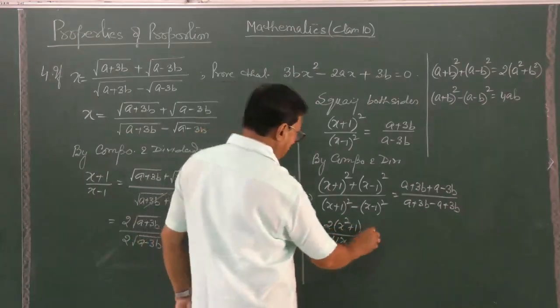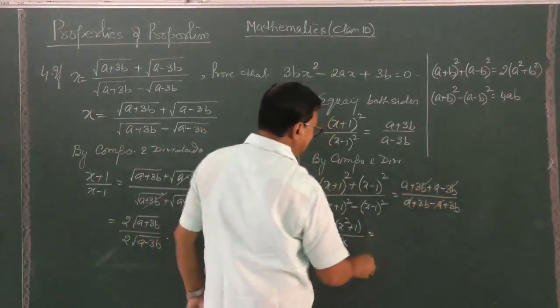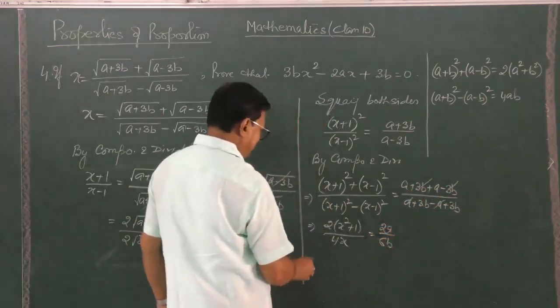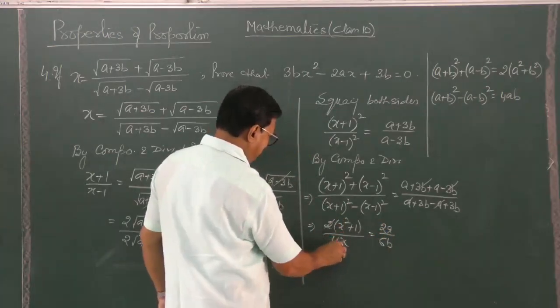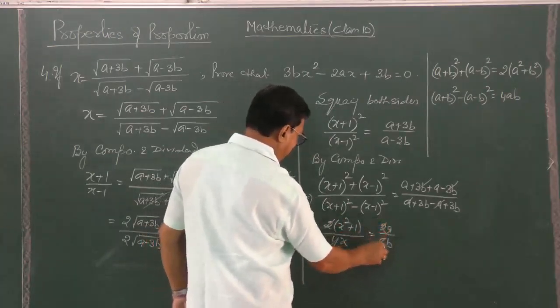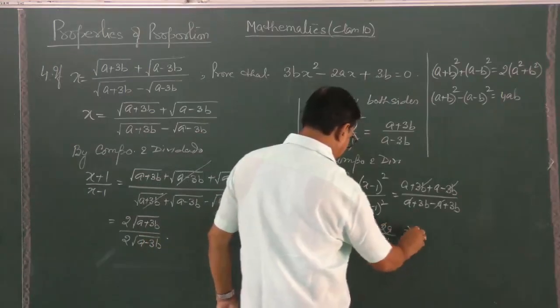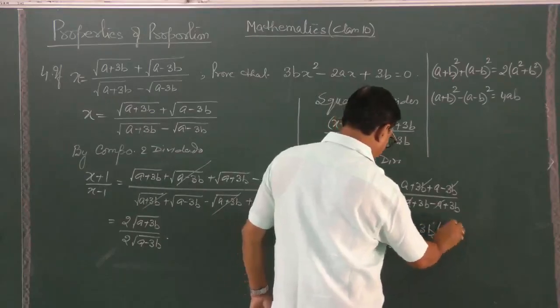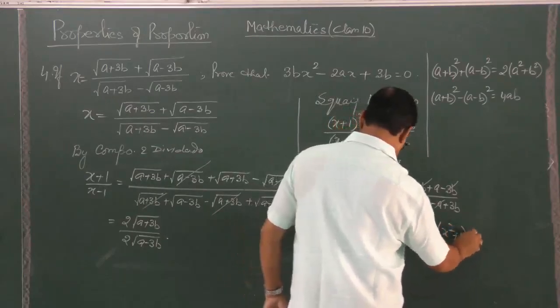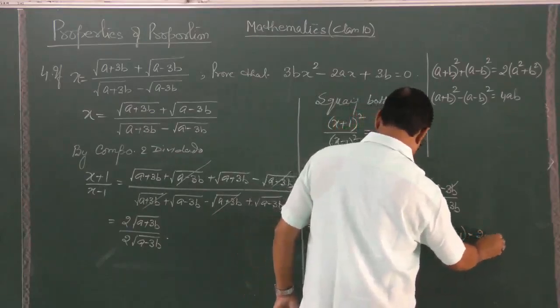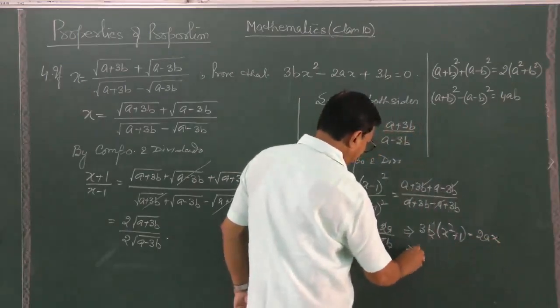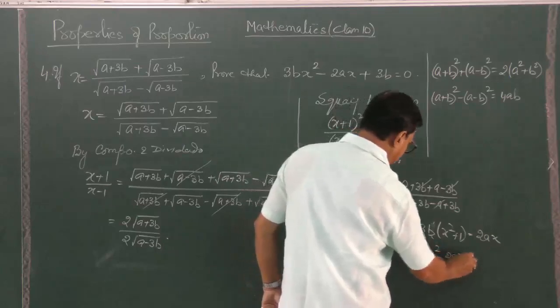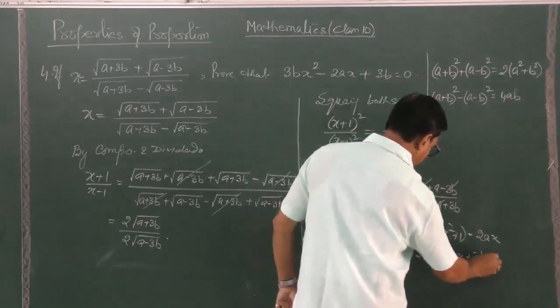So this is it and this is 4ab. This cancels, this cancels. You get 2a by 6b, so this is 2, this is 3. So what you get, 3b into x square plus 1 is equal to 2ax. So this is what you have to prove: 3b x square minus 2ax plus 3b equal to 0.